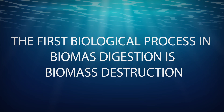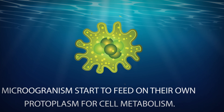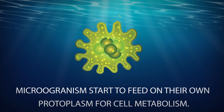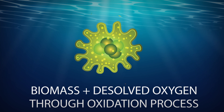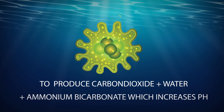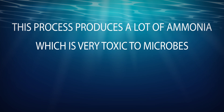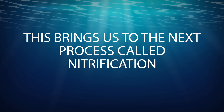The first biological process in biomass digestion is biomass destruction. In this process, food supply is depleted and microorganisms start to feed on their own protoplasm for cell metabolism. Biomass plus dissolved oxygen, through an oxidation process, produces carbon dioxide, water, and ammonium bicarbonate, which increases pH.